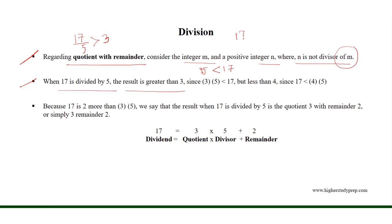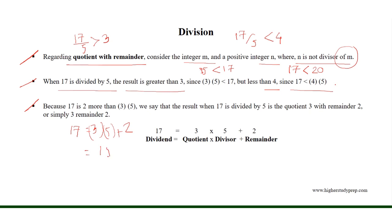But the result is less than 4, since 17 is less than 4 times 5, that is 17 is less than 20. Because 17 is 2 more than 15, as 3 times 5 equals 15. We say that the result, when 17 is divided by 5, is the quotient 3 with remainder 2, or simply 3 remainder 2.